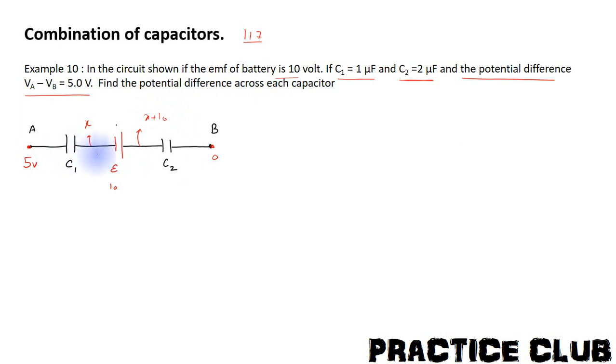Thus, we have to identify an electrically isolated system. So, this plate and this plate will be an electrically isolated system. In both plates, there will be a net charge of 0.